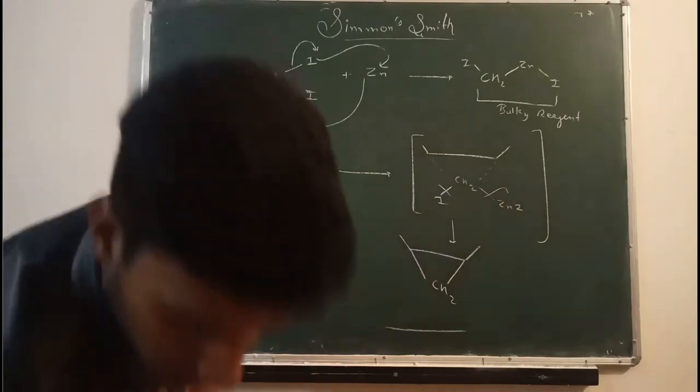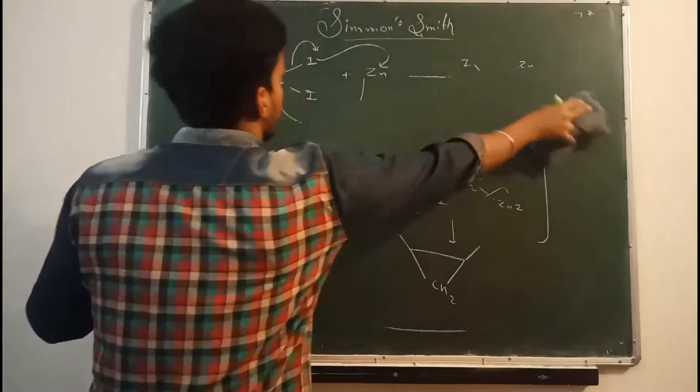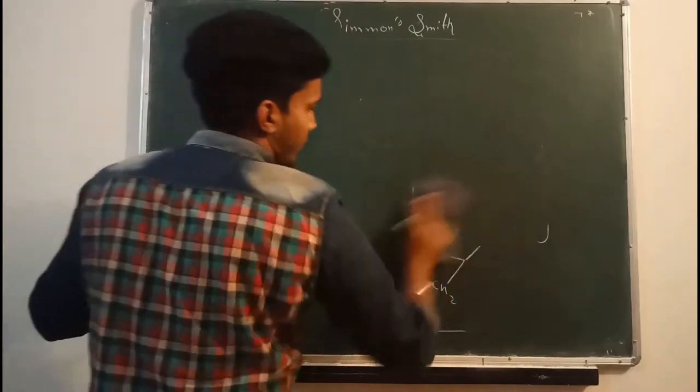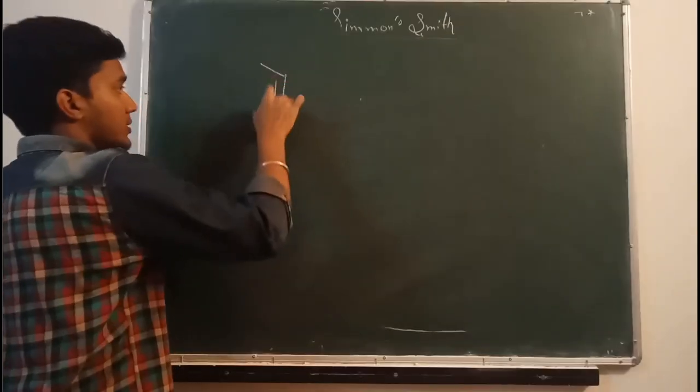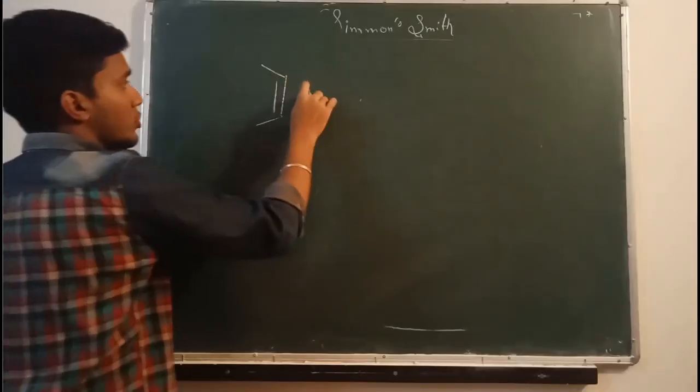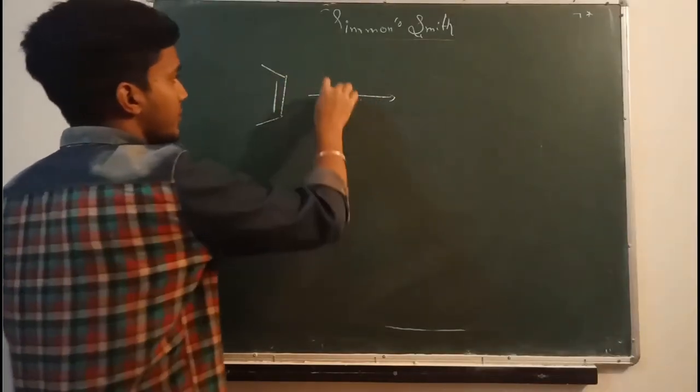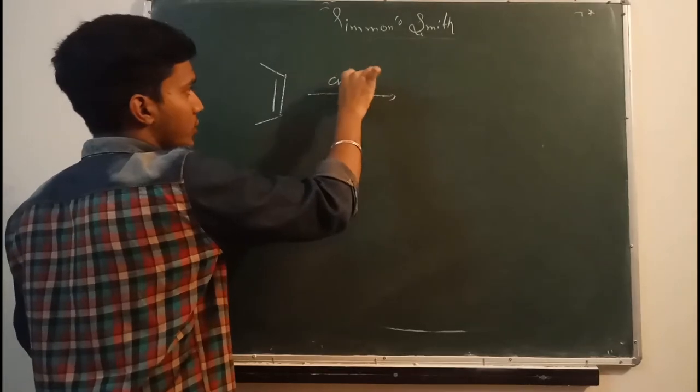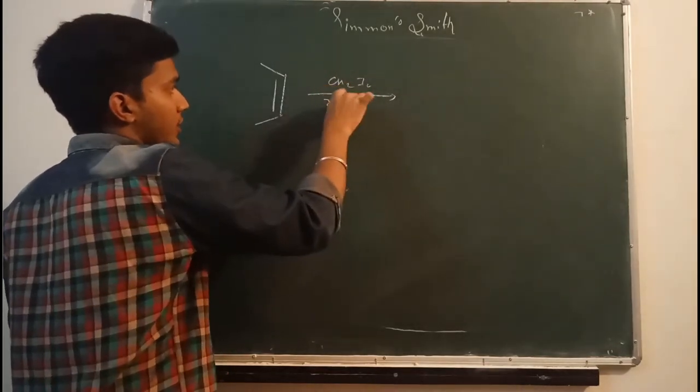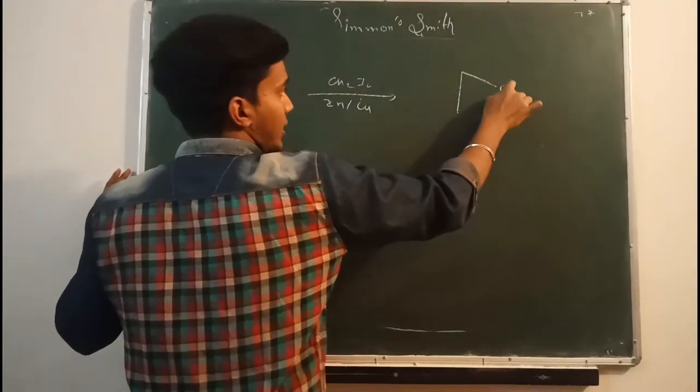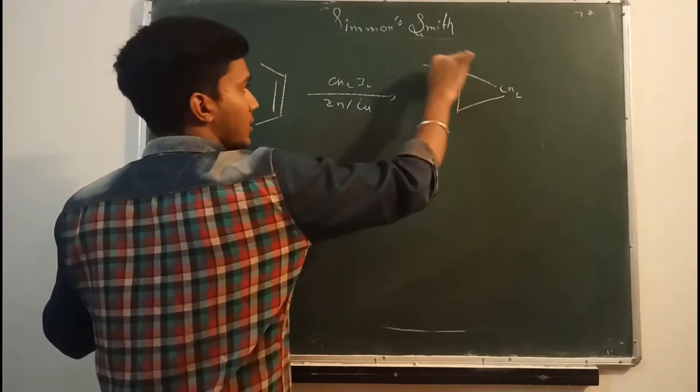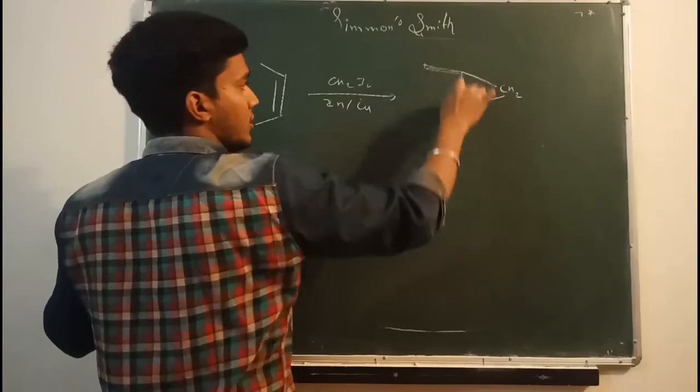Now we will do one or two examples relating to this. Now if we have a compound like this, if we will react in the presence of CH2I2 and zinc copper, then the product will be like the cyclopropane. And it will form the cis-isomer.